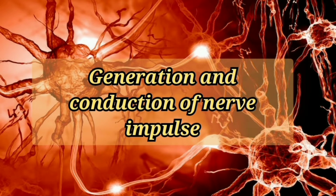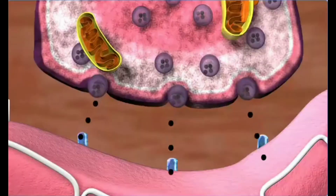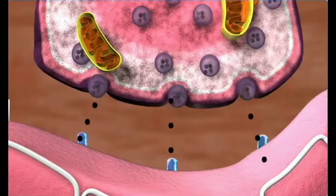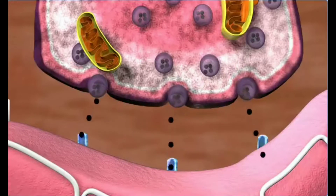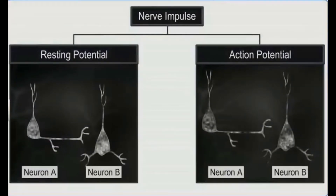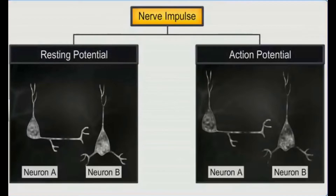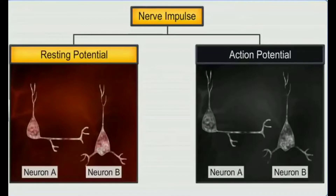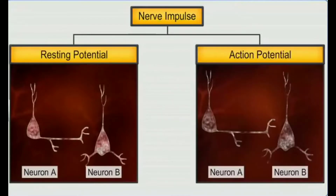The nerve impulse is the sum of mechanical, chemical, and electrical disturbances created by a stimulus in a neuron. The conduction of nerve impulse can be divided into two main phases: resting membrane potential and action membrane potential.